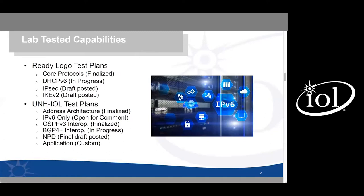The USGv6 profile speaks in terms of capabilities, and what they all come back to are the test plans themselves, at least for lab-tested capabilities. Those include the IPv6 Ready Logo test plans covering core protocols, DHCPv6, IPsec, and IKEv2. These are the ones that overlap with the IPv6 Ready program, for which a logo can be obtained. Core protocol test plans have been finalized and testing has been available for several months.